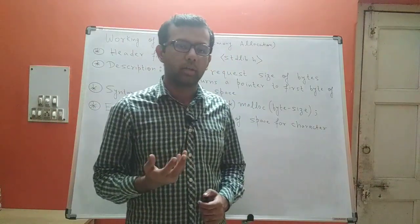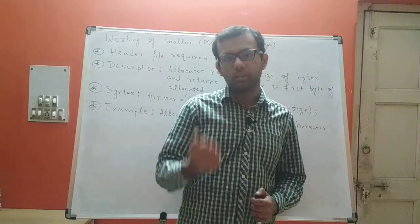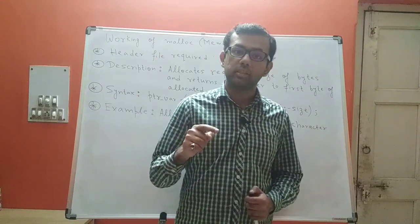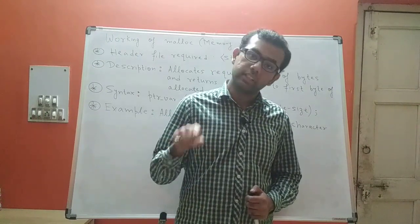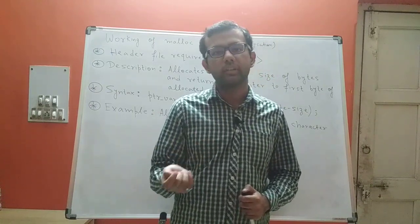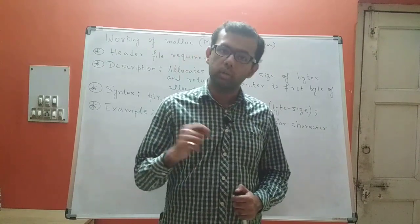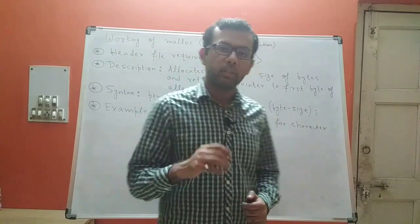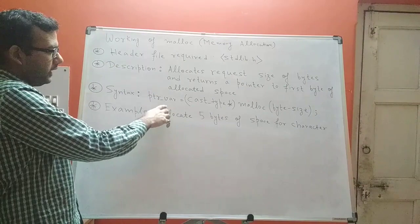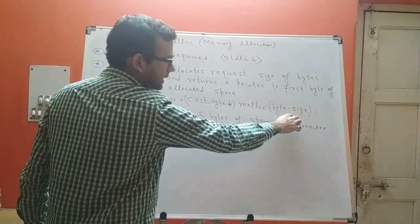So let's say you have asked for three bytes of memory using malloc. What malloc will do is allocate those three bytes of memory and return the address of the first byte. Since it returns an address, you need a pointer to hold that address. That is what you see in the syntax: malloc takes a byte size parameter specifying the amount of memory you want in terms of bytes.